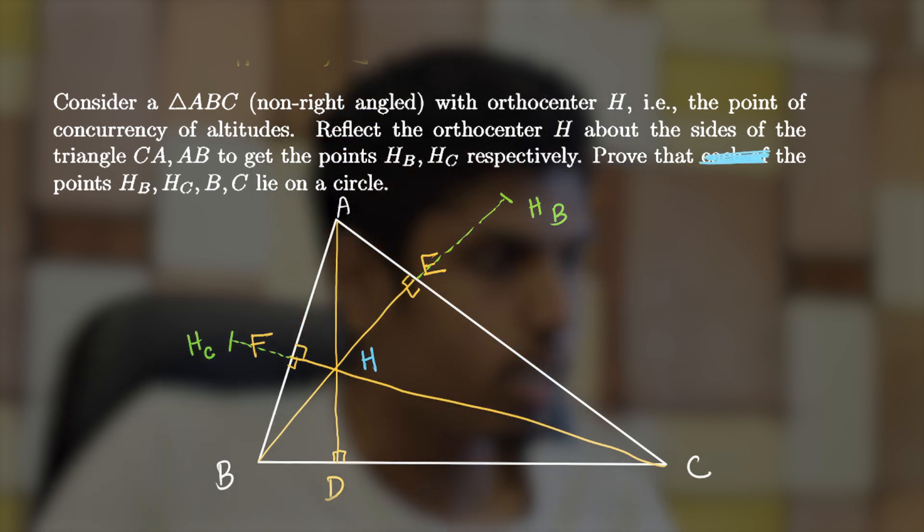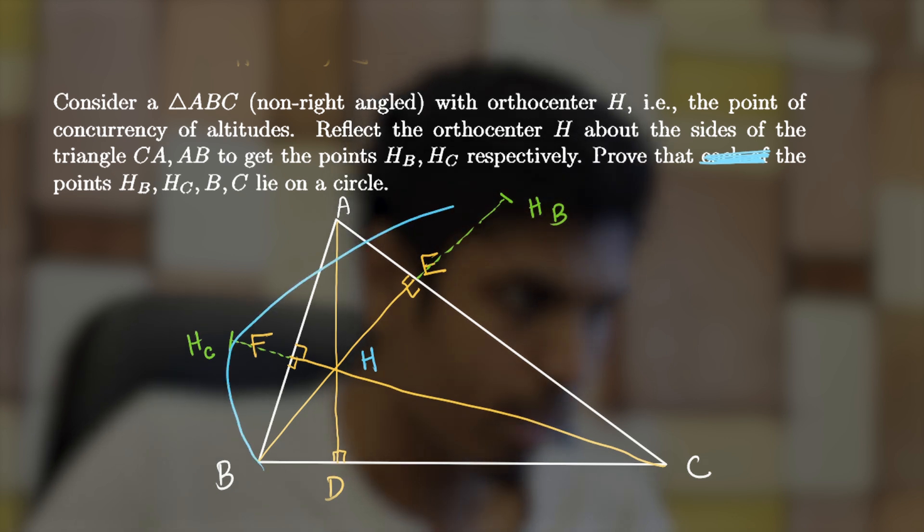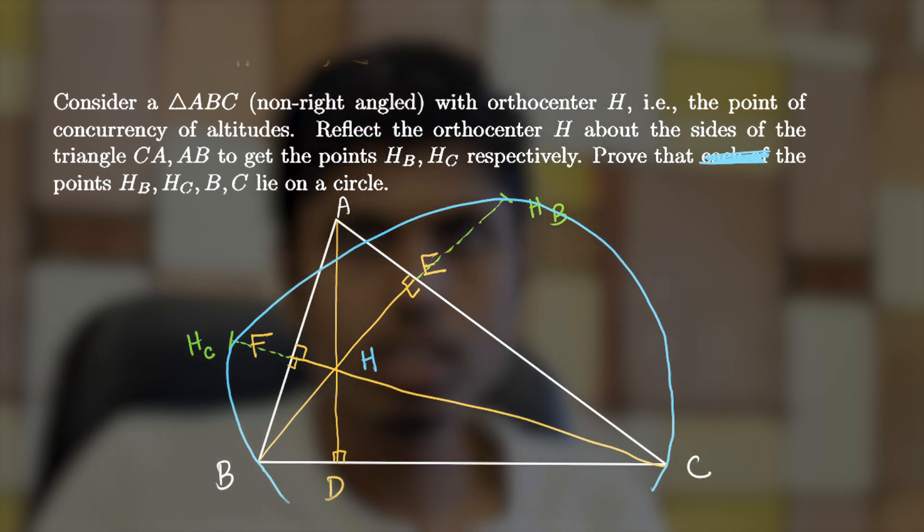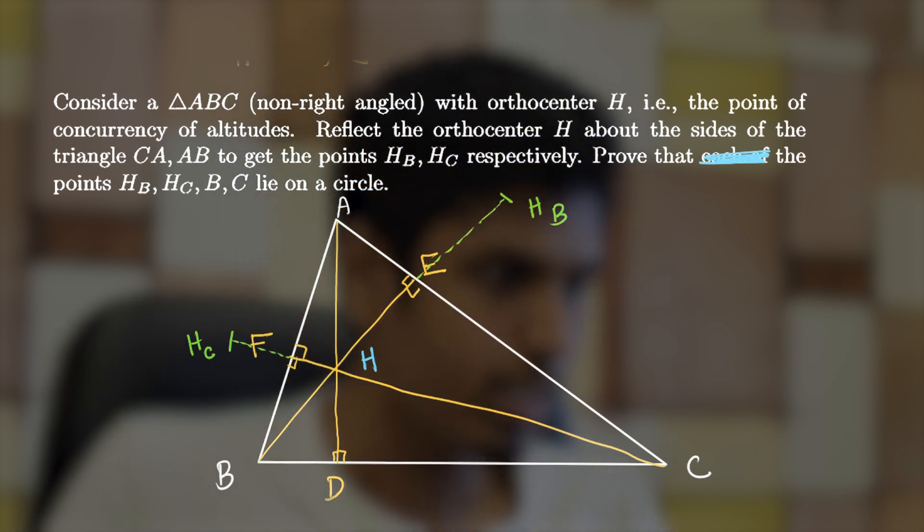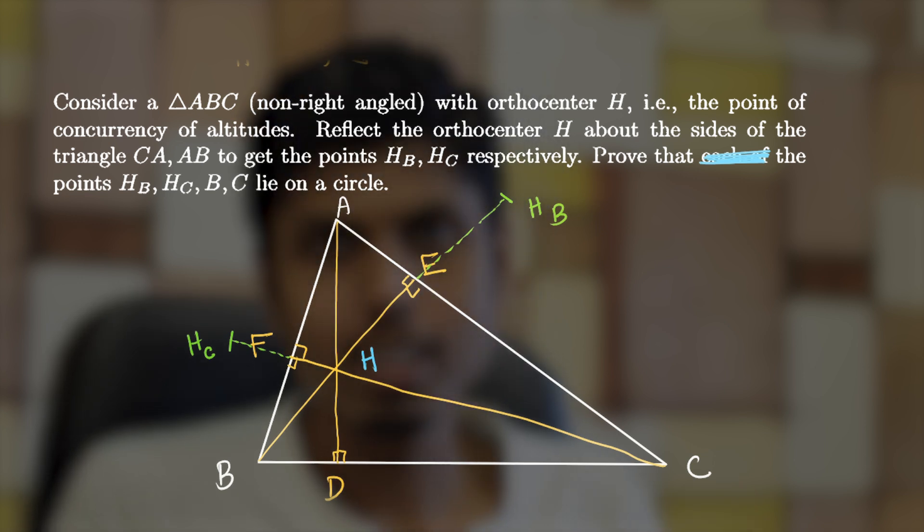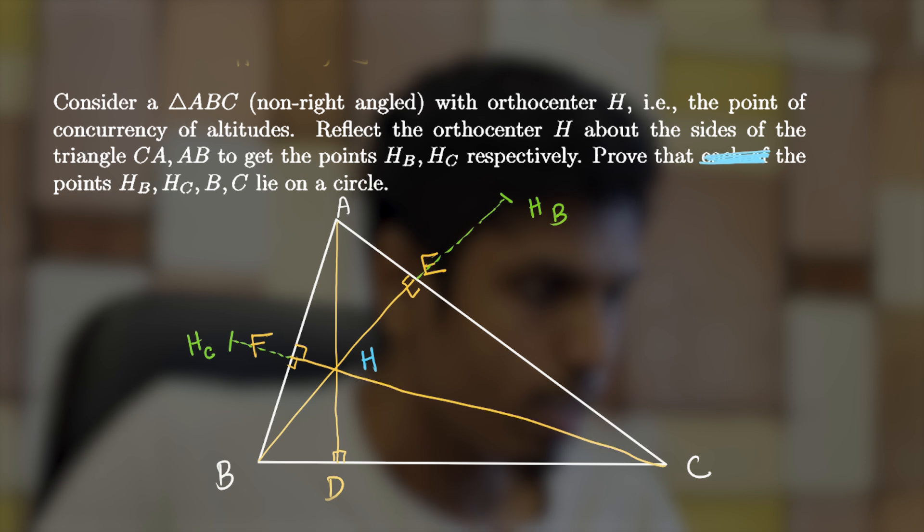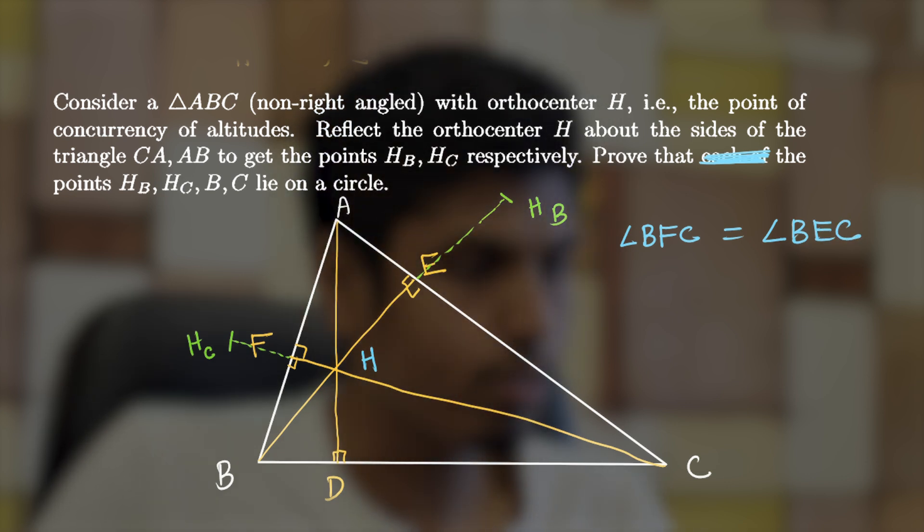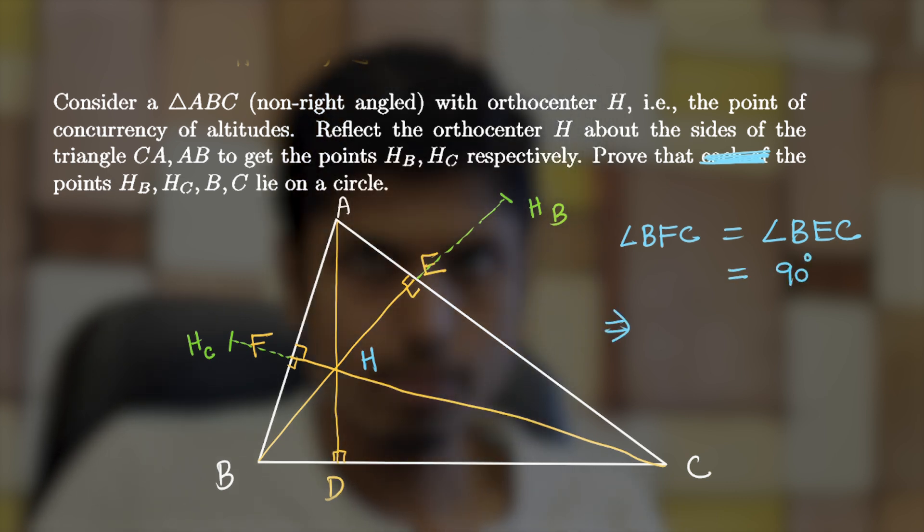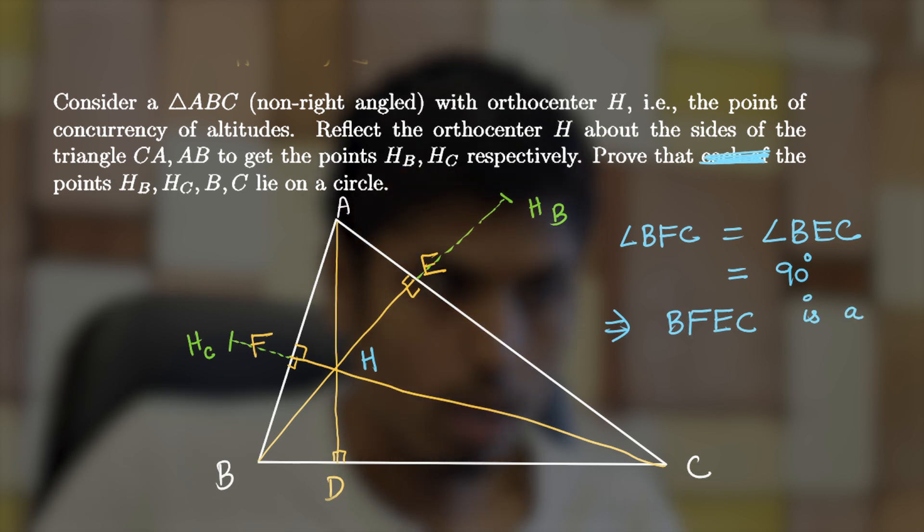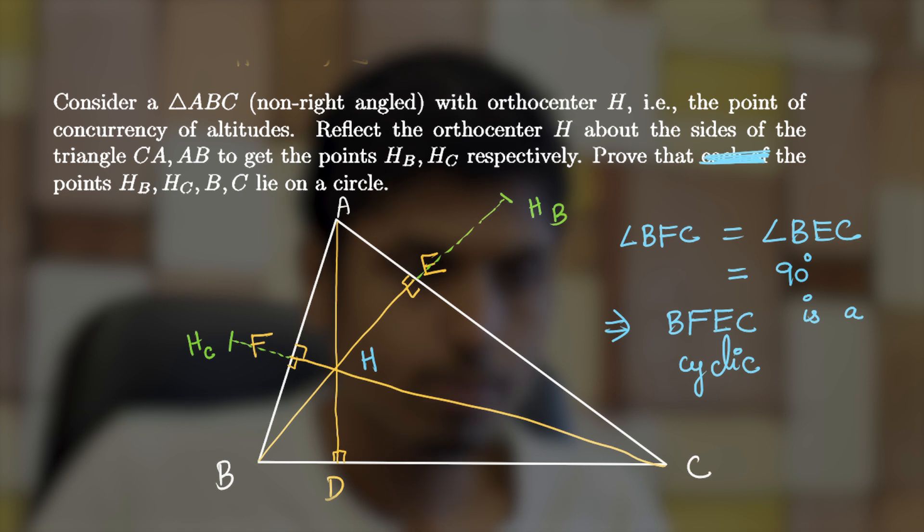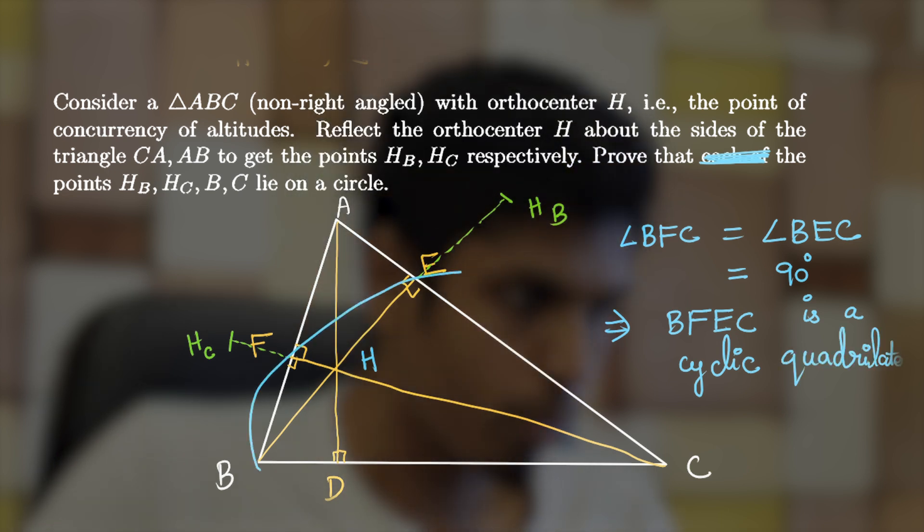Now we are reflecting the point H about side CA to get the point H_B, and about side AB to get the point H_C. We need to prove that the points B, H_C, H_B, and C all lie on a circle, or it is also called concyclic points. Let's prove this in an interesting way using the power of point idea that we learned. First observe that angle BFC equals angle BEC, where E is the foot of altitude from B and F is the foot of altitude from C, and they are equal to 90 degrees. And what if they are equal? It would imply that the quadrilateral BFEC is a cyclic quadrilateral, or equivalently the four points are concyclic.